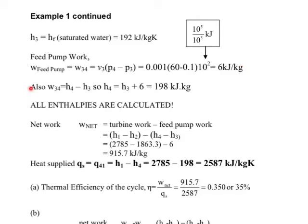So that now that we know the work done from 3 to 4 is actually the enthalpy 4 minus the enthalpy 3 we can now find the enthalpy 4 which is H3, 192 plus 6 which is 198.